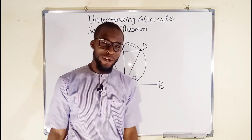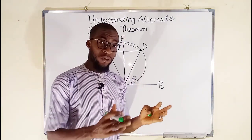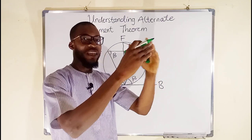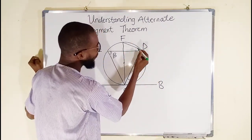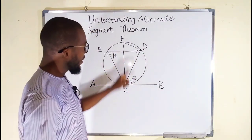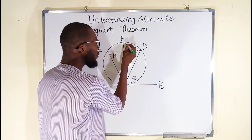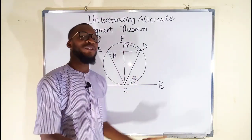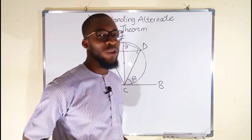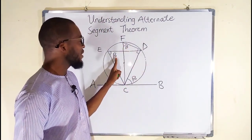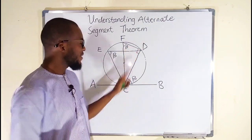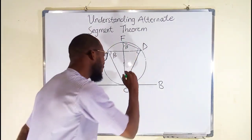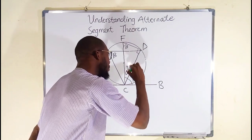Let's go back to circle theorem. One of the properties of a chord is that if a diameter — because a diameter is also a chord — subtends an angle to the circumference, the angle formed is 90 degrees. Therefore this angle right here is 90 degrees. Remember that this angle also is beta, for two reasons: one, because all angles subtended to the circumference from the same chord are equal, so if this angle is beta, this must also be equal to beta. And if this is 90 degrees, you can see that this is a right-angle triangle.